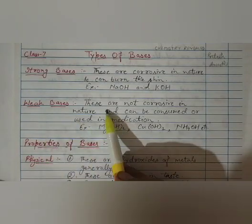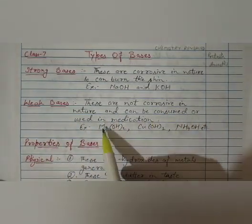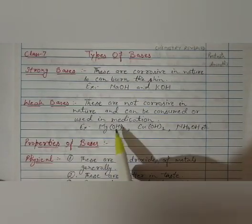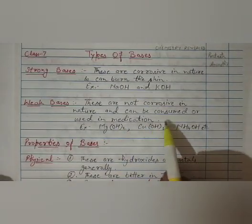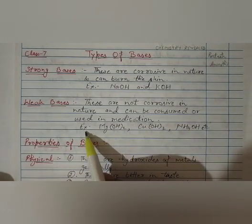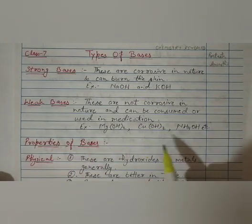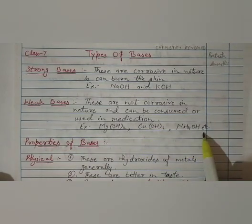Now the weak bases. These are not corrosive in nature and can be consumed or used in medication. That we will study in the uses of particular bases. Examples of weak bases are magnesium hydroxide, copper hydroxide, and ammonium hydroxide.